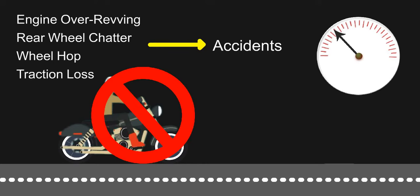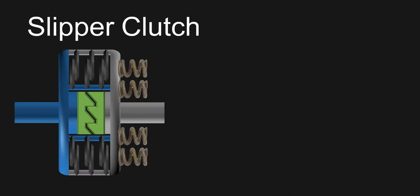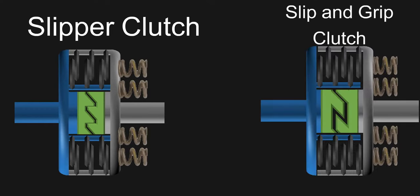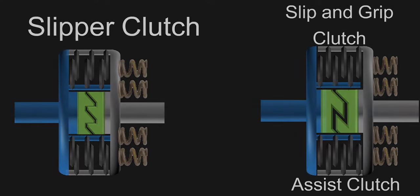To avoid such situations, sports bikes and modern cruisers have slipper clutch. And there is one more modification of this slipper clutch which is called slip and grip clutch or assist clutch, which lightens the effort required to declutch. So let's untangle how both of them work.